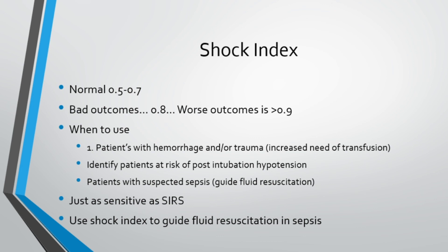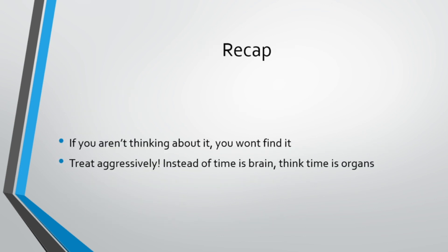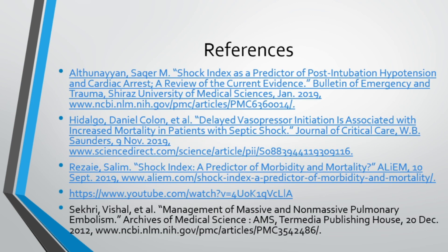Anything over 0.8 is concerning — consider resuscitating these patients with fluids or push-dose pressors before intubation, aiming for a shock index of 0.5 to 0.7 without delaying the airway. In recap: if you aren't thinking about a diagnosis, you won't find it — use the SHOCKED mnemonic. Treat shock aggressively; time is organs. Aim for a MAP of 65 mmHg and above, and use shock index pre-intubation to identify patients at risk.